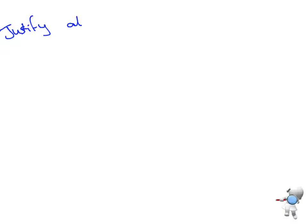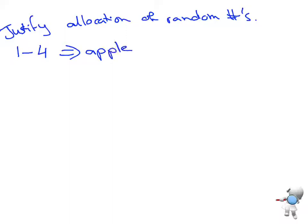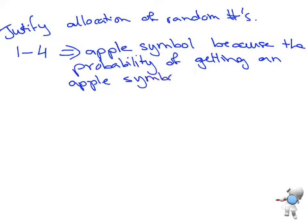For merit, I also need to justify the allocation of random numbers. I'll start with the first category: numbers 1 to 4 were assigned to the apple symbol because the probability of getting an apple symbol is 0.4, which equals 4 out of 10. So if I generate 10 random numbers, I need to assign four of them to this category to match the probability.